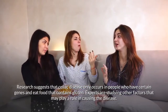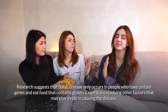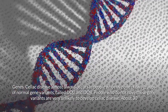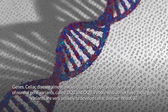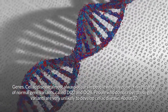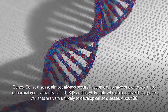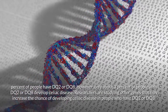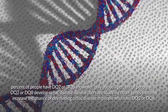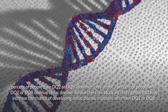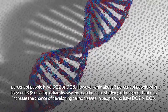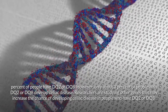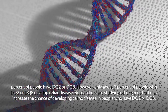Research suggests that celiac disease only occurs in people who have certain genes and eat food containing gluten. Celiac disease almost always occurs in people who have one of two groups of gene variants called DQ2 and DQ8. About 30 percent of people have DQ2 or DQ8, but only about three percent of those people develop celiac disease. Researchers are studying other genes that may increase the chance of developing the disease.